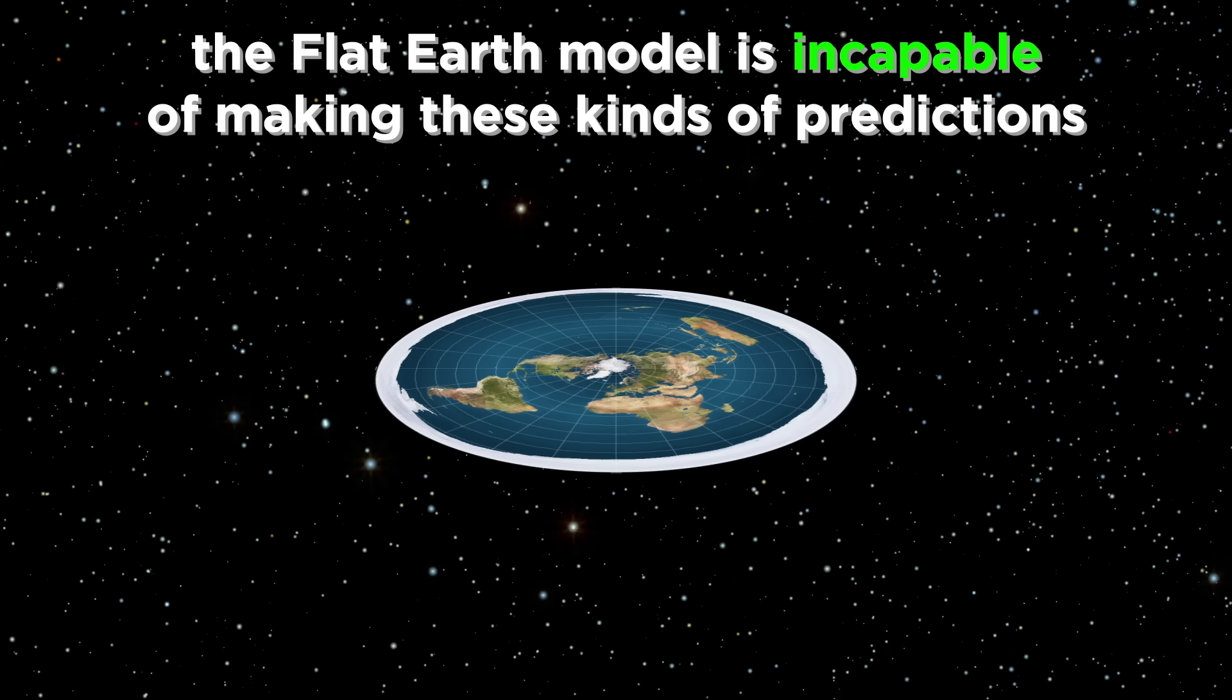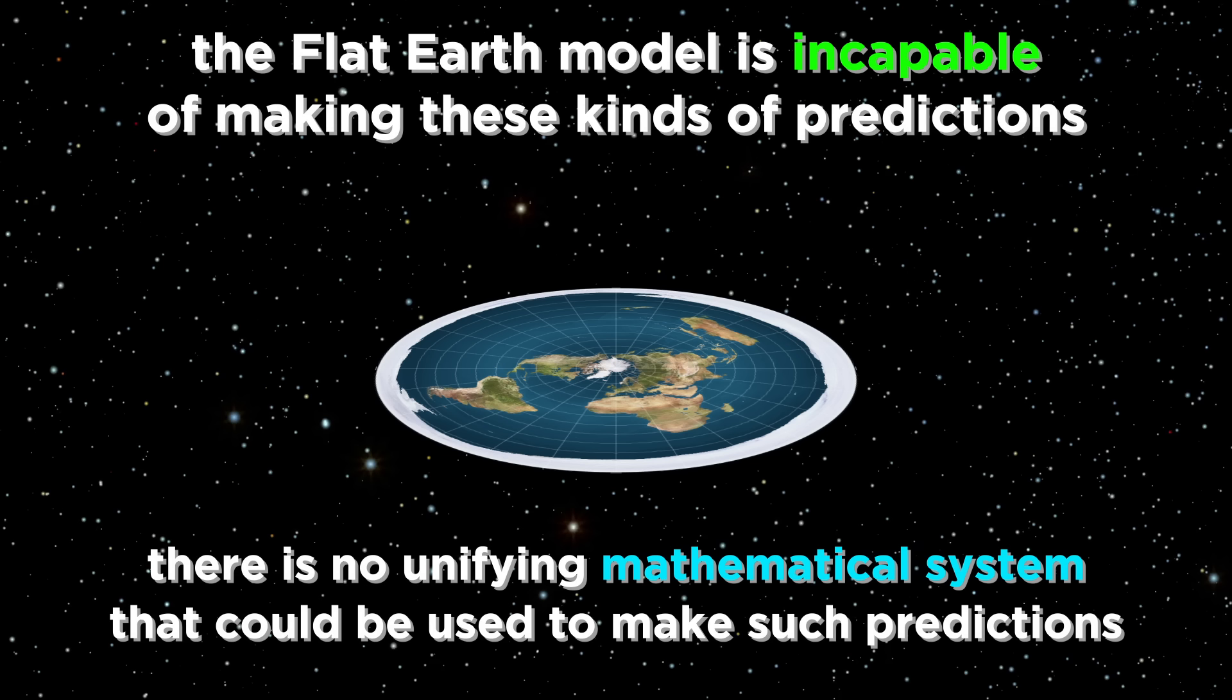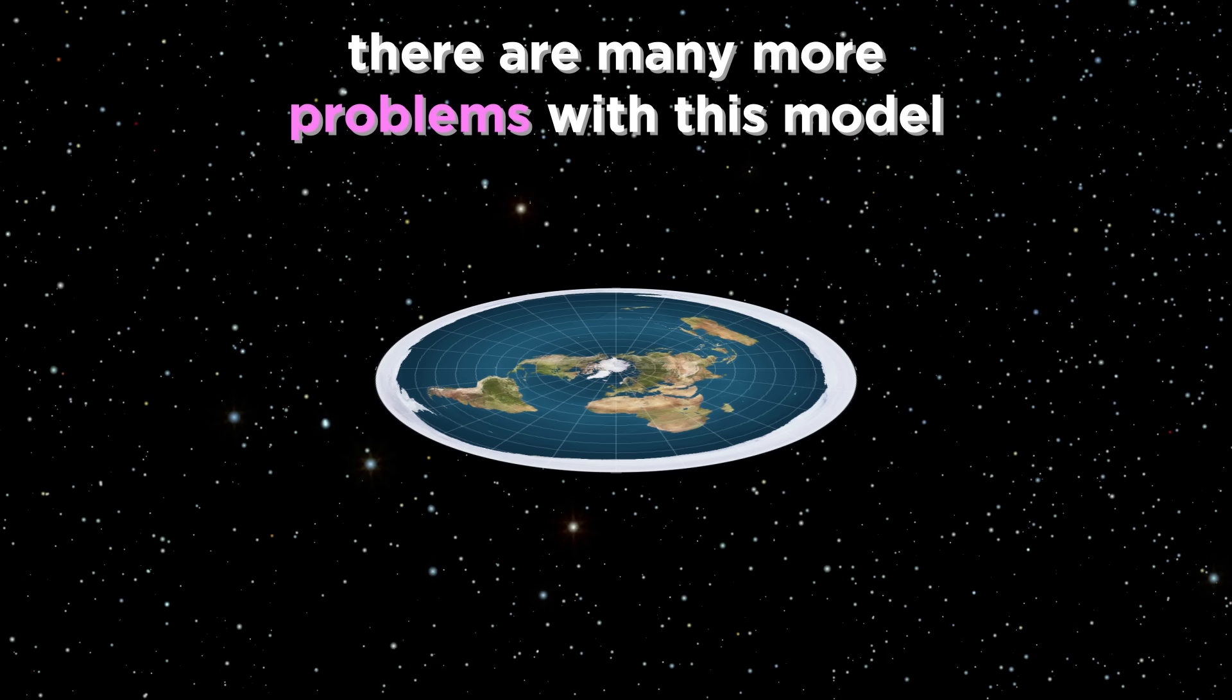The flat earth model can never make such predictions, not just because the notion of an eclipse has no logical basis, but also as there is no unifying mathematical system. It's a bunch of separate phenomena with separate explanations, if such explanations even exist. It doesn't end there, the flat earth model has a huge laundry list of other things to explain, besides what we have mentioned so far.